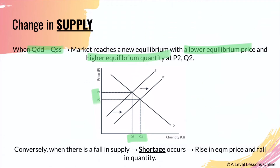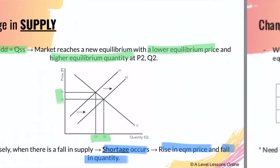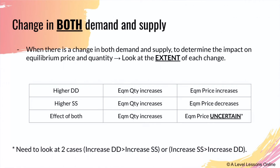When there's an increase in supply, your price will usually fall because producers are willing to accept a lower price to clear the surplus, but the equilibrium quantity increases because the quantity supplied in the market has actually increased. Conversely, when there is a fall in supply, there will be a shortage, producers are unable to produce enough, and hence there will be a rise in equilibrium price and a fall in quantity.